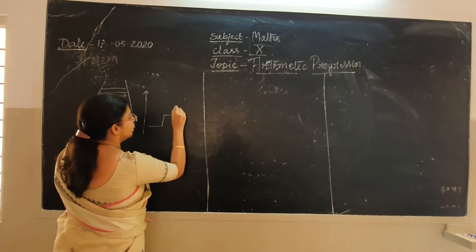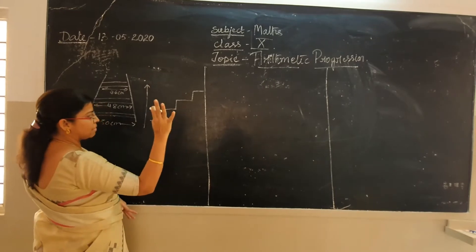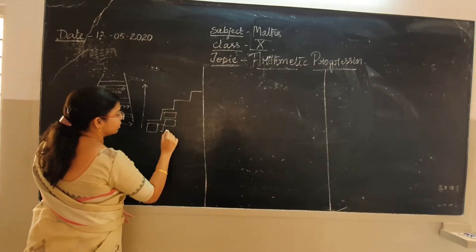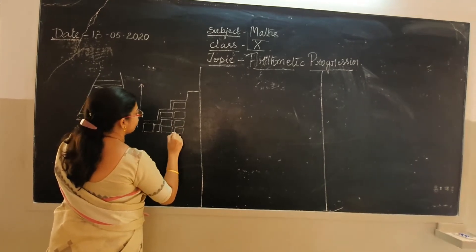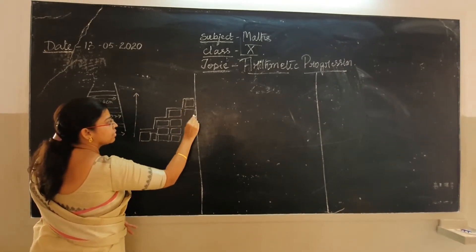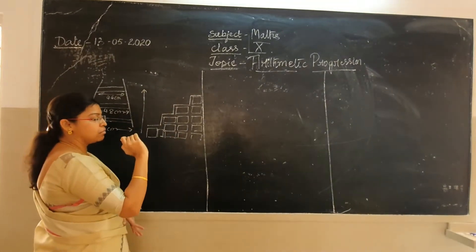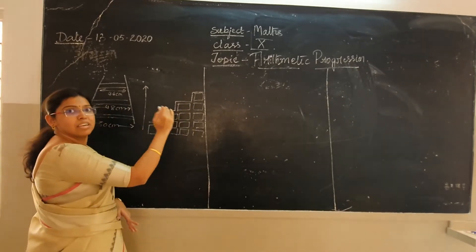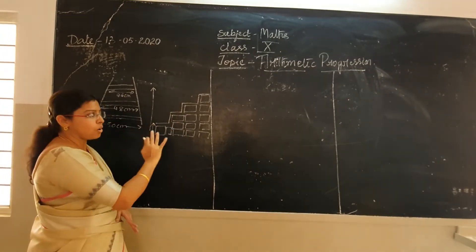Now consider another example: a staircase. For any staircase, just remove the plaster — what do you see? Bricks. Bricks everywhere. From one step to the next step, look at the number of bricks. Is it increasing randomly? No, it is not increasing randomly. It is incrementing with a fixed difference. The difference in the number of bricks is fixed. So here also we see a sequence or a pattern being followed.